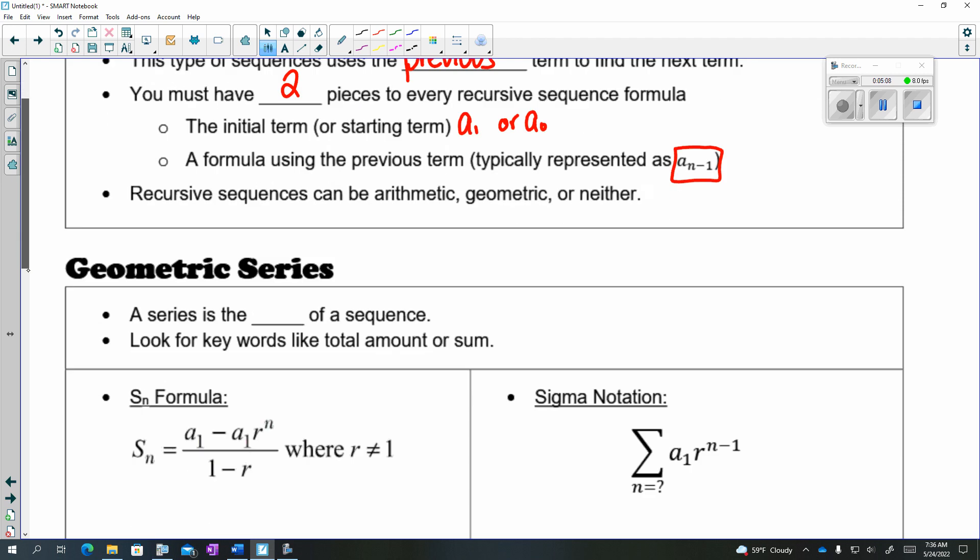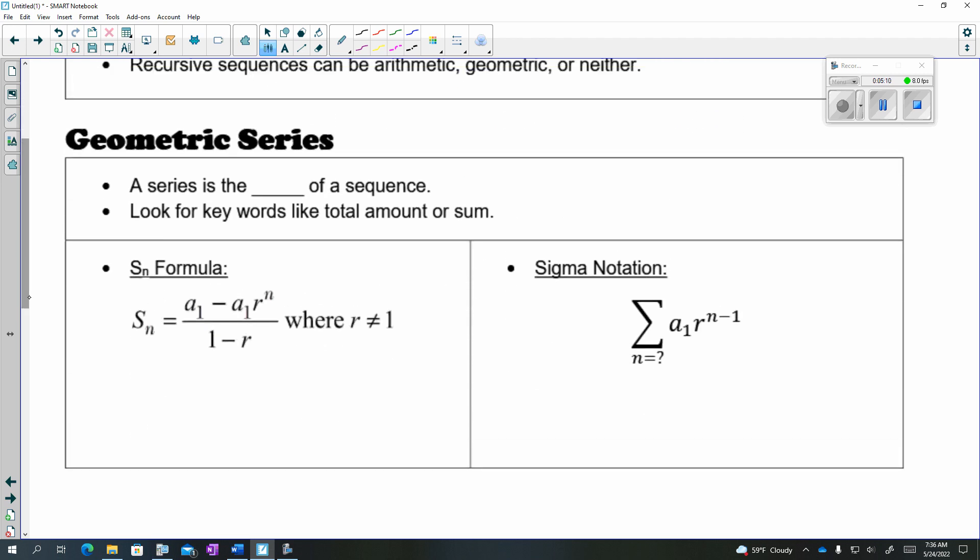And then lastly, we have a series. Remember that a series is the sum of a sequence. So if my sequence is 2, 4, 8, 16, and so on, the series is 2 plus 4, plus 8, plus 16, and so on. We're going to look for keywords in questions like this where you see total amount or sum.